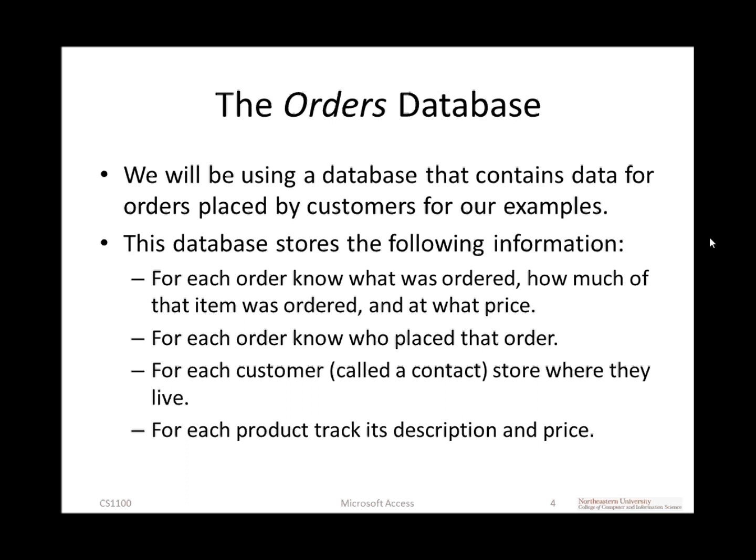This database stores a bunch of information, including the following: orders that customers have placed, how much was ordered in each order, at what price the item was sold, how many items are in that order, who placed that order, where that person lives including their address and other pertinent demographic information. For each product we sell, it contains product information: the price, weight, height, and so on.